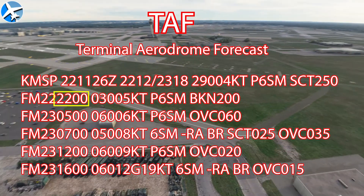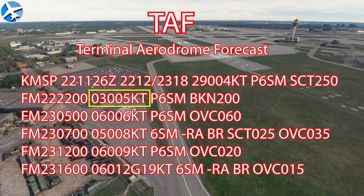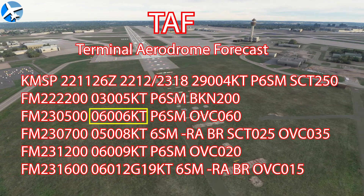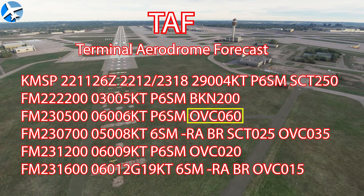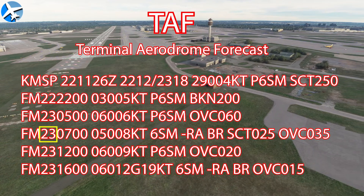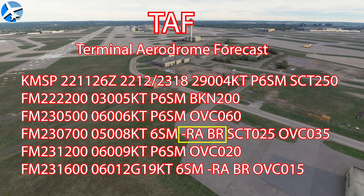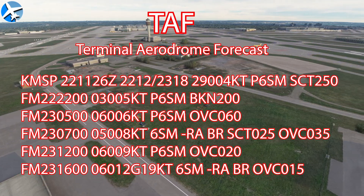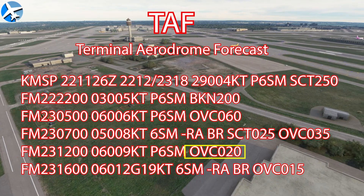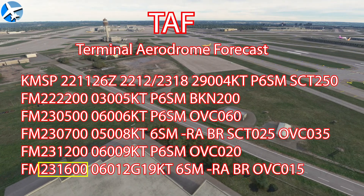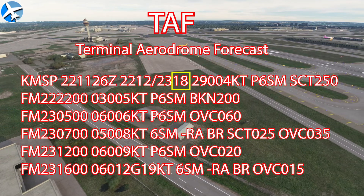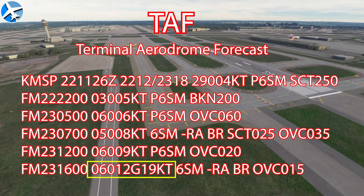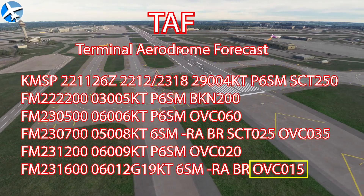From 22Z on the 22nd, winds are 030 at 5, visibility better than 6, broken 20,000. From 05Z on the 23rd, winds forecasted 060 at 6, visibility better than 6, overcast 6,000. From 07Z on the 23rd, winds 060 at 9, visibility better than 6, overcast 2,000. From 12Z on the 23rd, 060 at 9, visibility better than 6, overcast 2,000. From 16Z to 18Z, winds 060 at 12 gusting 19, 6 miles visibility, light rain with mist, overcast 1,500.